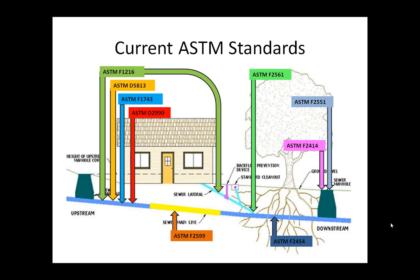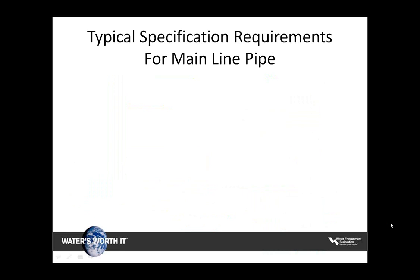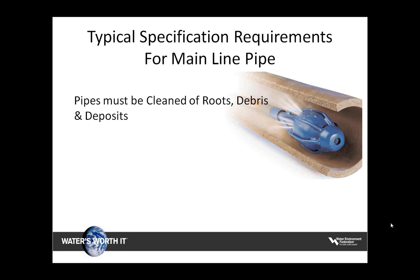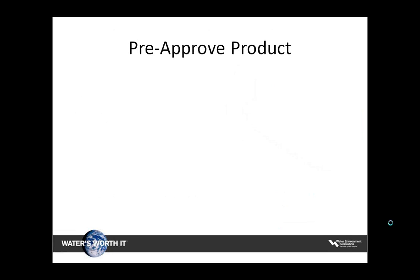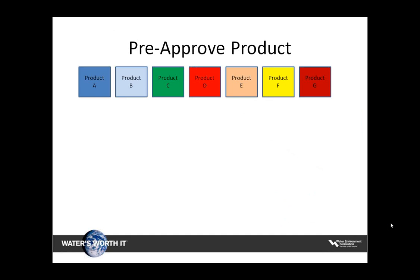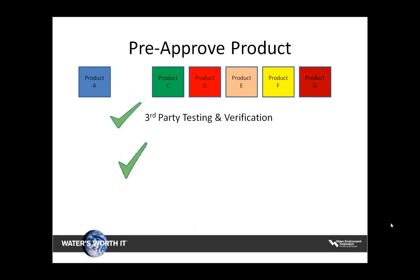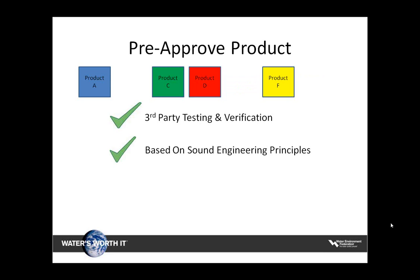These are just a few of what's out there in our industry. Typical specifications have certain requirements — for instance, pipes must be cleaned from roots, debris, and deposits, and the product should be pre-approved prior to bidding. By setting certain criteria, inferior products can be eliminated: if specific third-party testing cannot be verified, if products are not based on sound engineering principles, if they don't meet applicable ASTM standards, or if they can't meet project goals — they can all be eliminated.